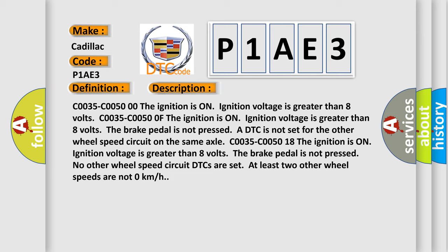C0035-C00500: The ignition is on, ignition voltage is greater than 8 volts. The brake pedal is not pressed. A DTC is not set for the other wheel speed circuit on the same axle.